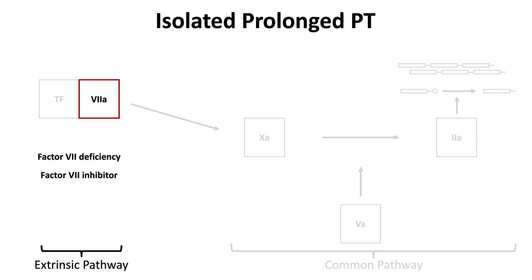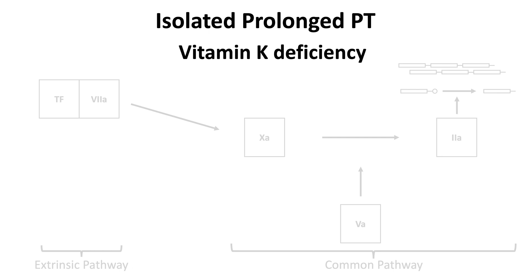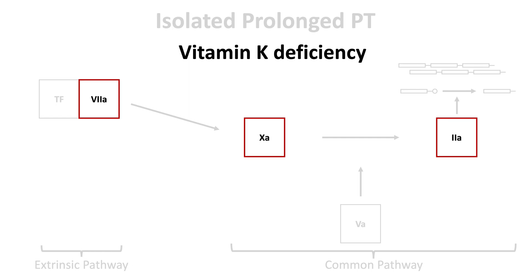A prolonged PT is usually due to an acquired factor VII deficiency. Acquired factor VII deficiency can occur due to vitamin K deficiency. In this case, the affected factors are the vitamin K-dependent factors, shown here as 2, 7, and 10. Severe vitamin K deficiency prolongs both the PT and the APTT. However, early onset or mild vitamin K deficiency can present with an isolated prolonged PT.